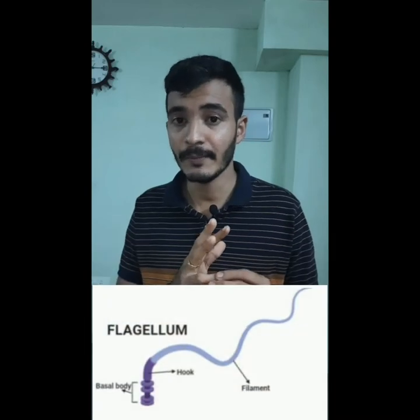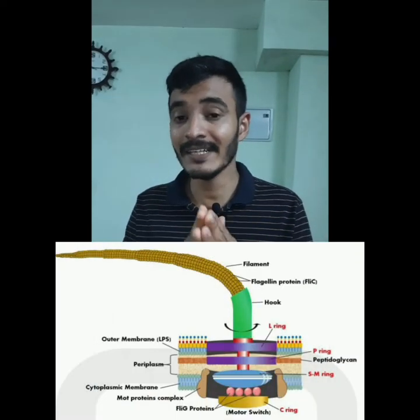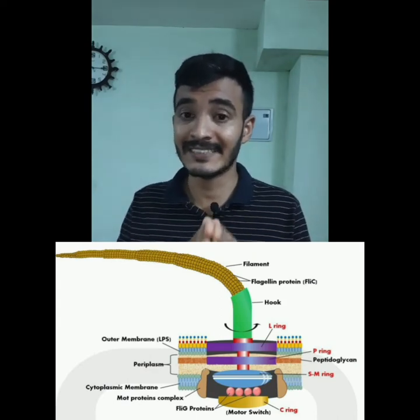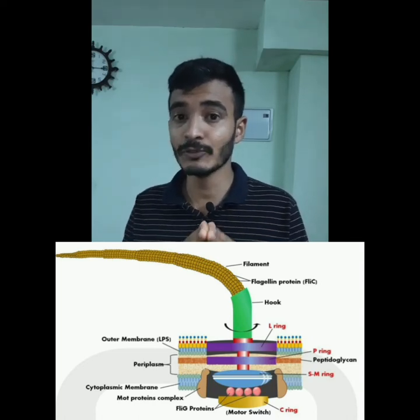Now we have to look at the structure. In the flagella there are 3 main parts: the outer filament, the hook, and the basal body. The filament is made of a protein called flagellin, and it is the longest part of the flagella.